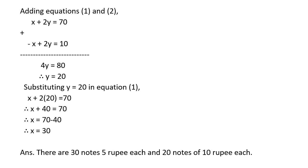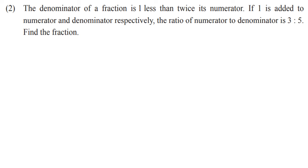I hope you must have completed it. If you have not, pause the video and complete it. Now let's go towards question number 2. The denominator of a fraction is less than twice its numerator. If 1 is added to numerator and denominator respectively, the ratio of numerator to denominator is 3:5. Find the fraction.